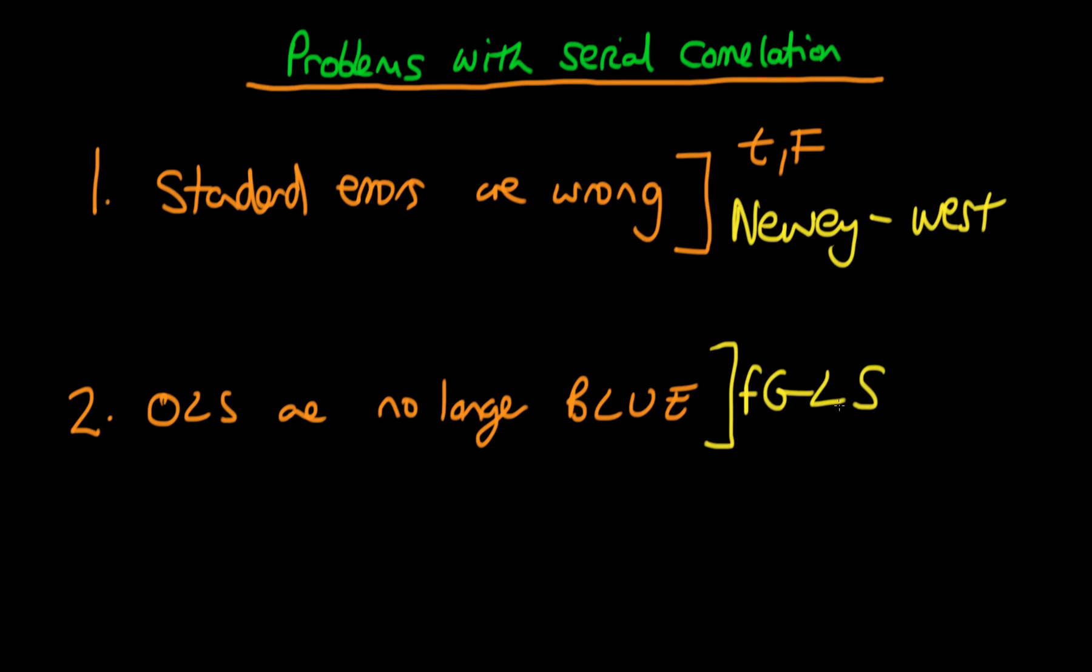The benefit of using generalized least squares as opposed to just correcting the standard errors is that we're actually addressing the root of the problem. We're actually going to transform our model to a situation for which then using ordinary least squares on that transformed sample will then be BLUE. So that's a better way of dealing with the problem than just correcting the standard errors, because in principle on that transformed system our estimators will get closer to the true population parameters more of the time.